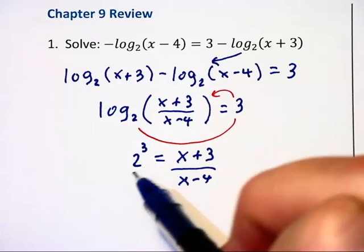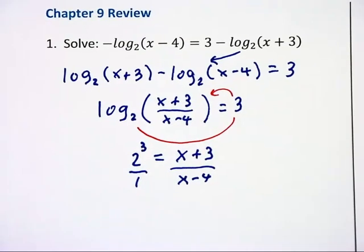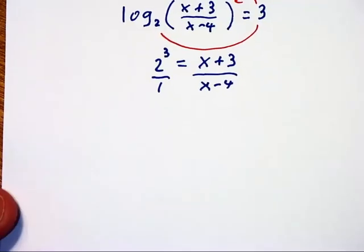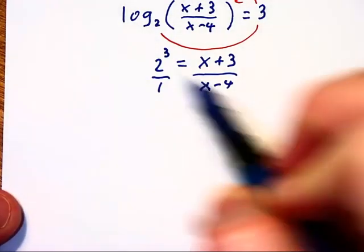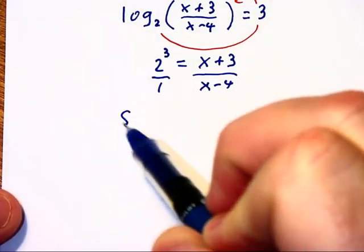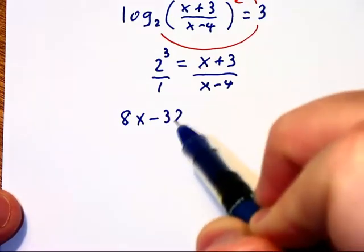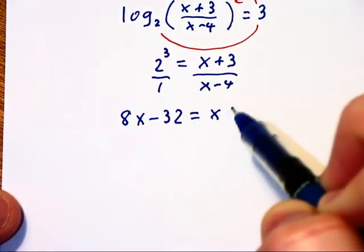I'm going to think of that 2 to the third as 2³/1 so that I can cross multiply and solve. One diagonal gives me 8 times (x-4), which is 8x minus 32. The other diagonal is x plus 3.